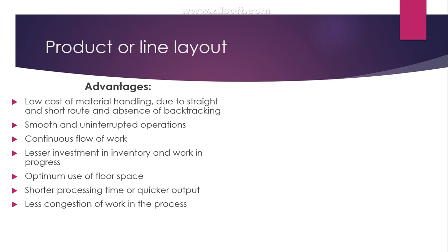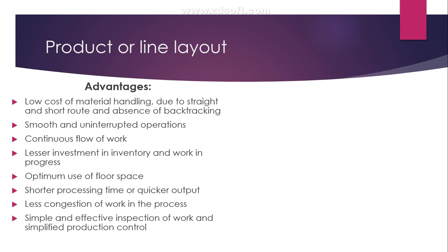There is less congestion of work in process, since the sequentially designed and predetermined operations reduce piling up during production. Simple and effective inspection of work and simplified production control are also advantages, as the assembly line design makes maintaining and supervising production control straightforward. Finally, there is lower manufacturing cost per unit — with uninterrupted operations and continuous flow running, a high volume is produced, which helps minimize the manufacturing cost per unit.